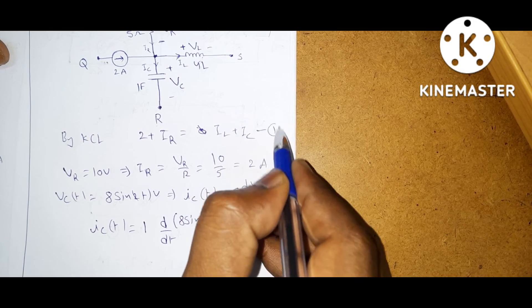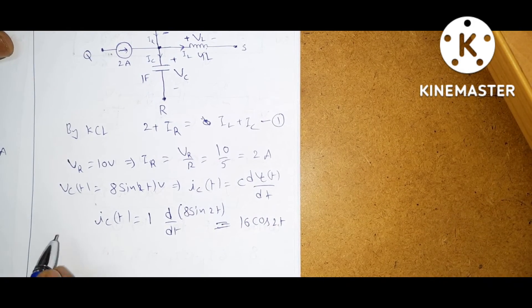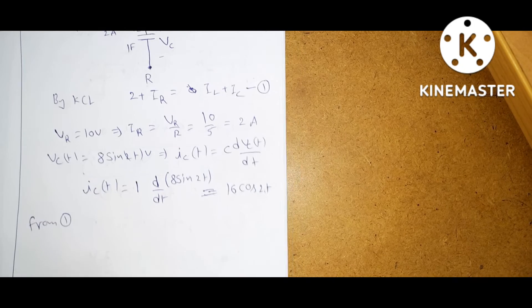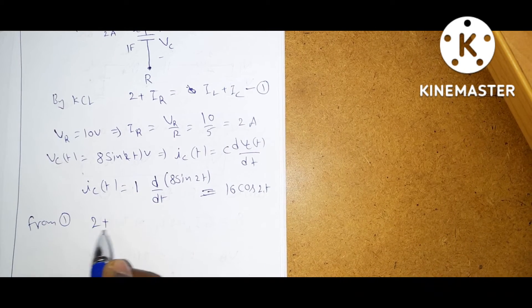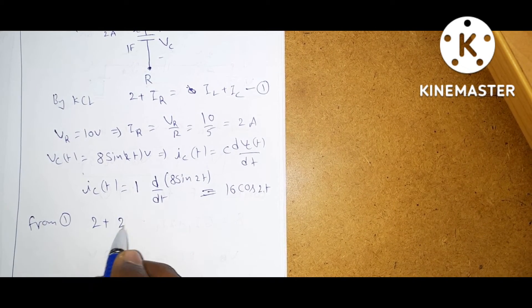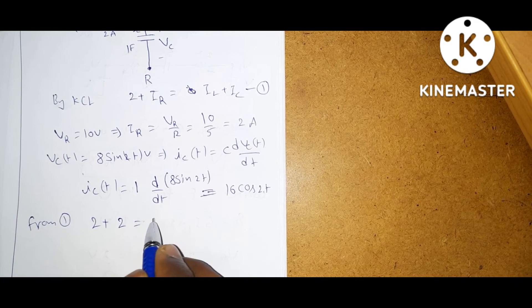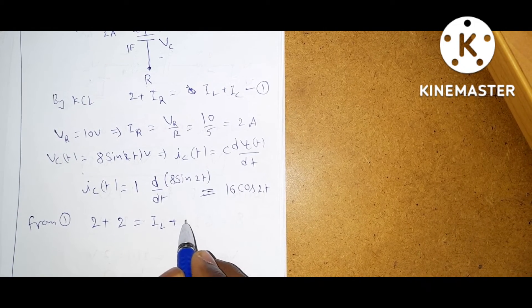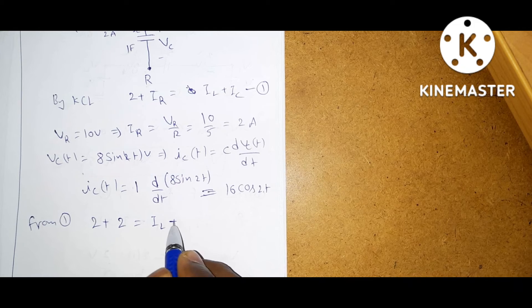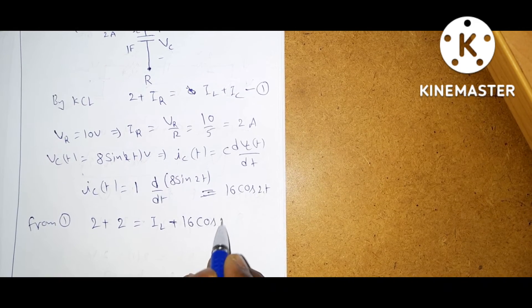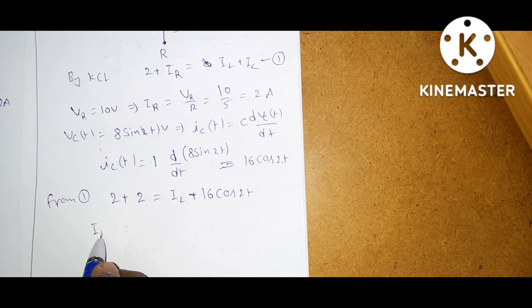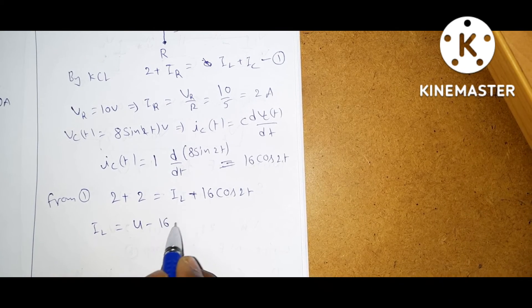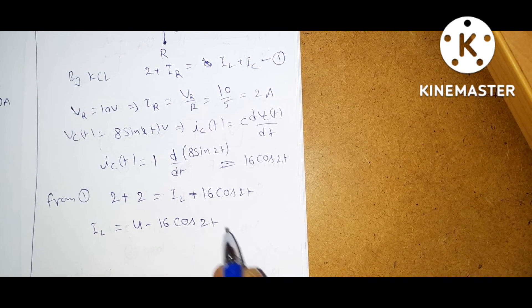From equation 1: 2 plus IR — which is 2 amps — equals IL plus IC. IC is 16 cos 2t. From this, IL is equal to 4 minus 16 cos 2t.